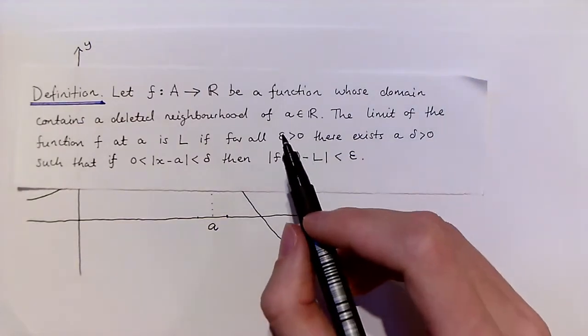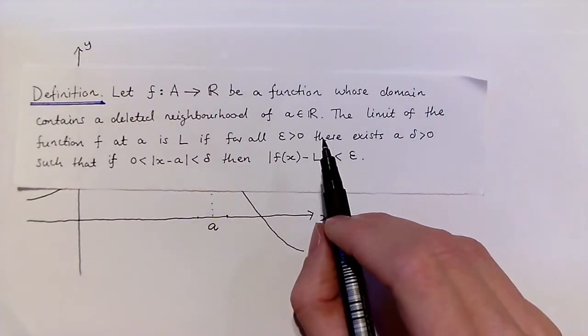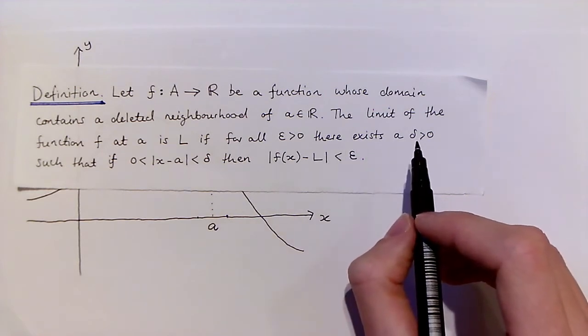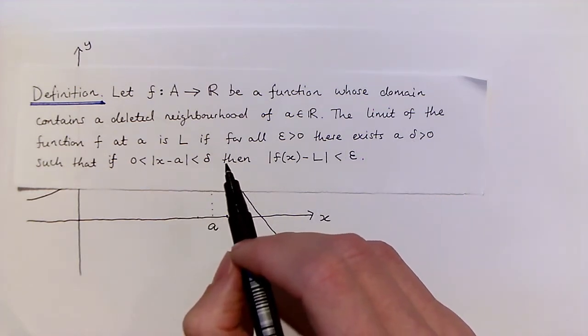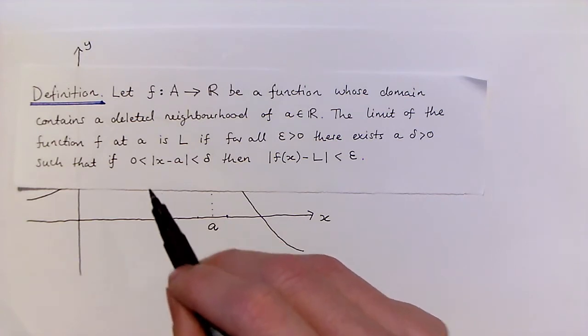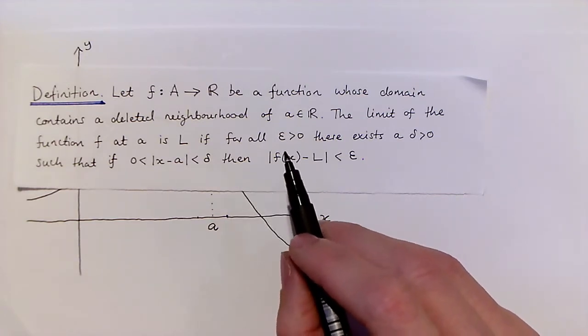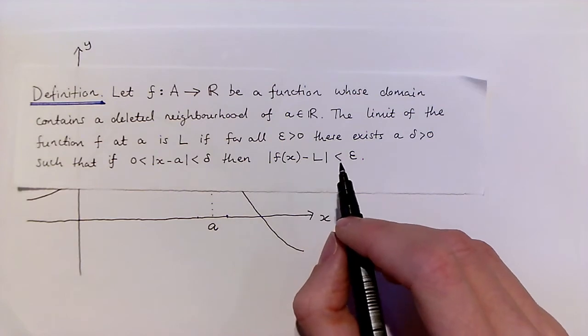And this tells us that for each positive epsilon, there should be a positive number delta, such that for values of x within delta of a, but not equal to a itself, the distance between the value of the function f(x) and the number l is less than epsilon.